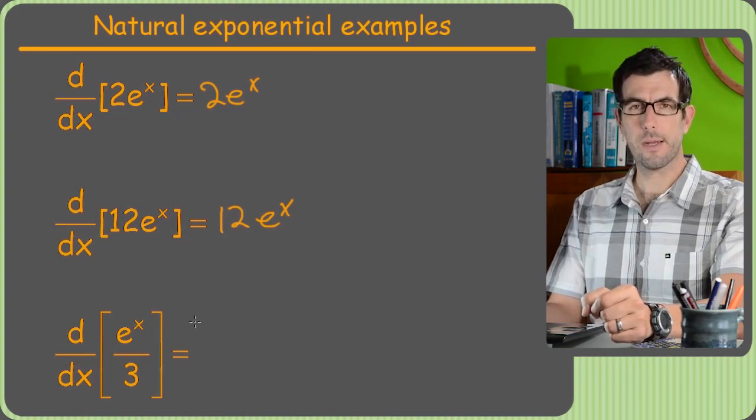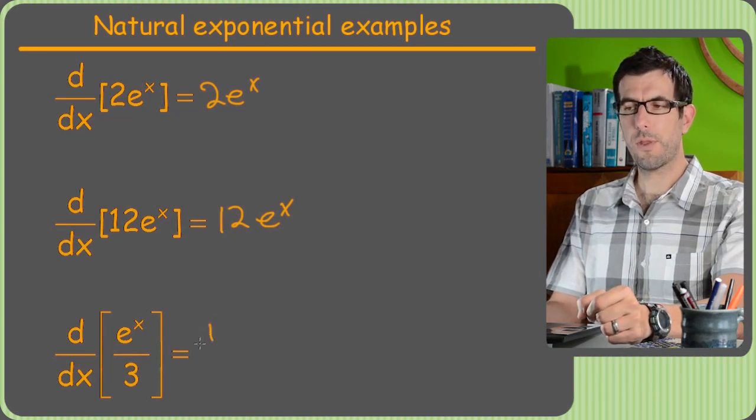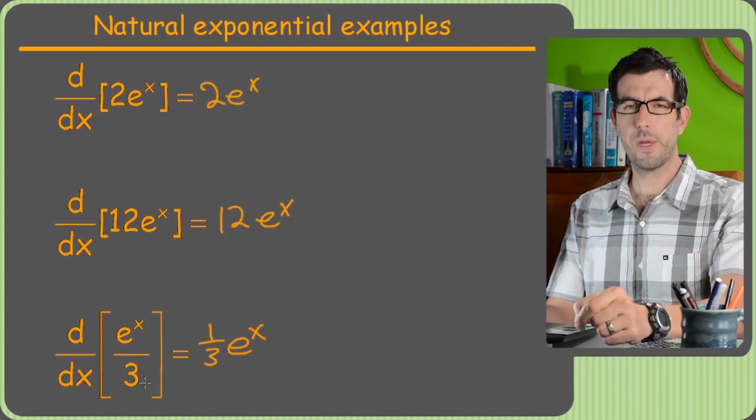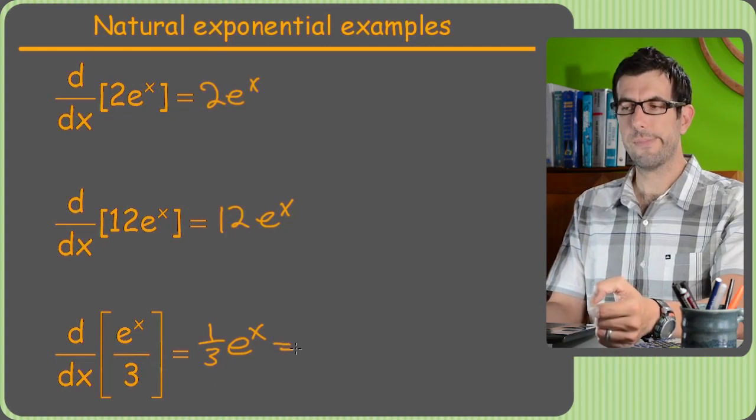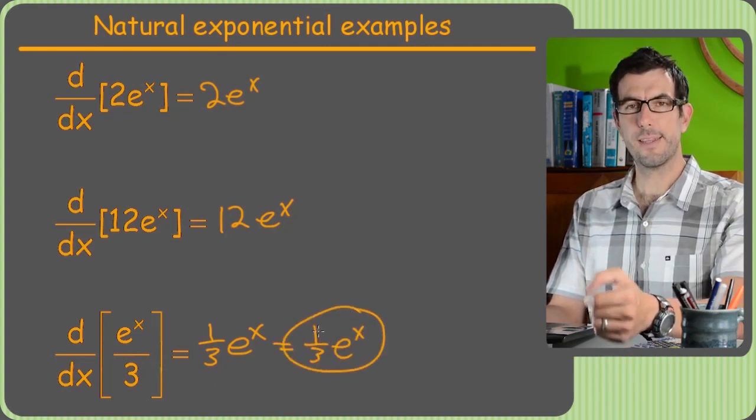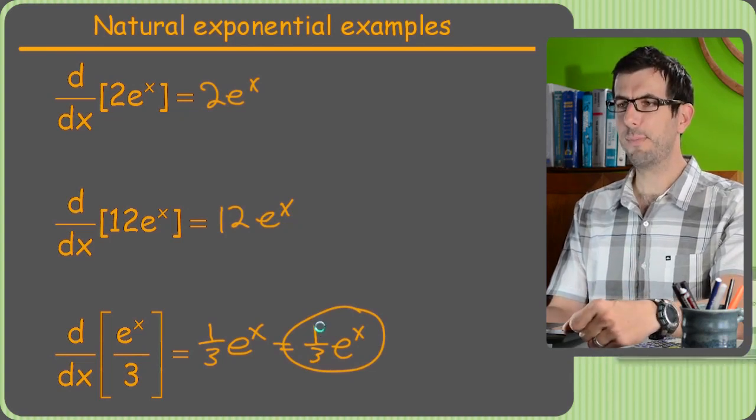This one's a little bit uglier, but really this is just 1 third times e to the x, because anything divided by 3, you're really just multiplying by 1 third. Now that you've got it in this form, take its derivative, and you get 1 third e to the x. Pretty wacky, right? These really, nothing happens. It's really boring.